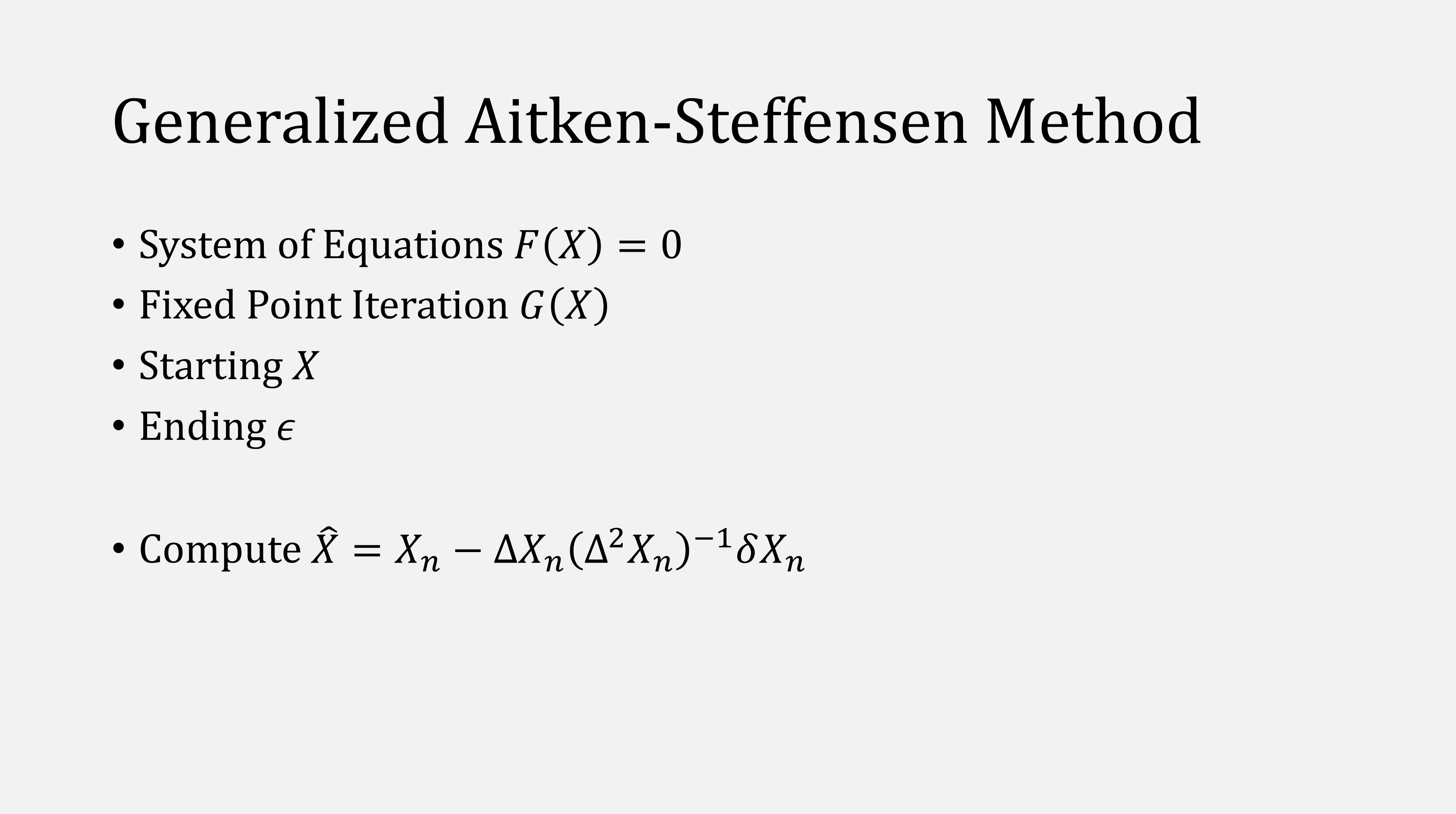Compute x hat equal to Aitken's delta squared method generalized, then restart with x equal to x hat until the norm of f of x hat is less than some epsilon.